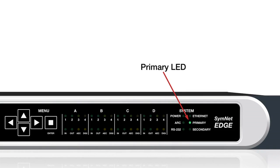The primary and secondary LEDs are solid green when connected and all Dante audio subscriptions are active. They turn amber when some audio subscriptions are active, and turn red to indicate all Dante audio subscriptions are inactive.